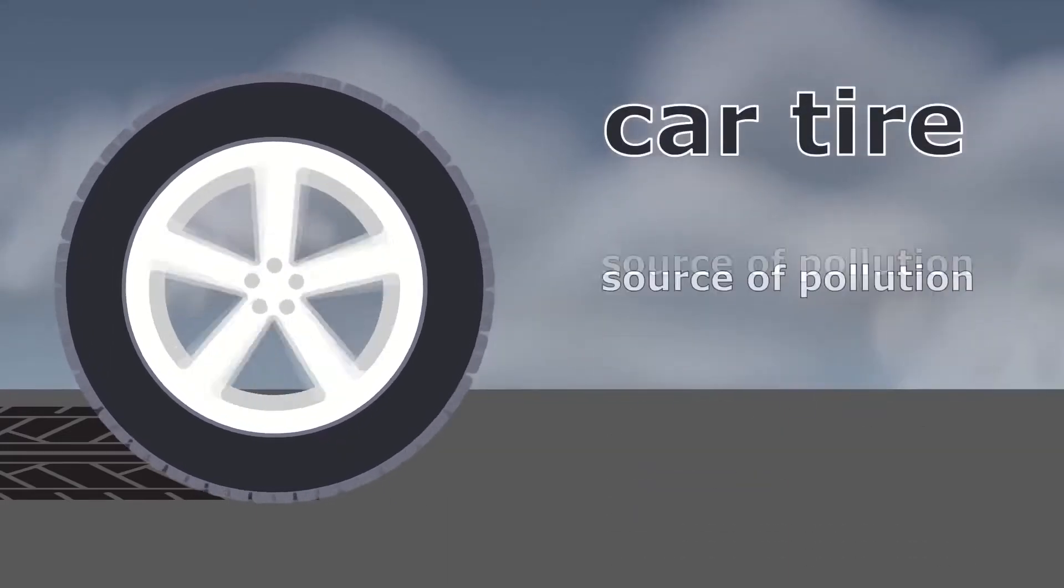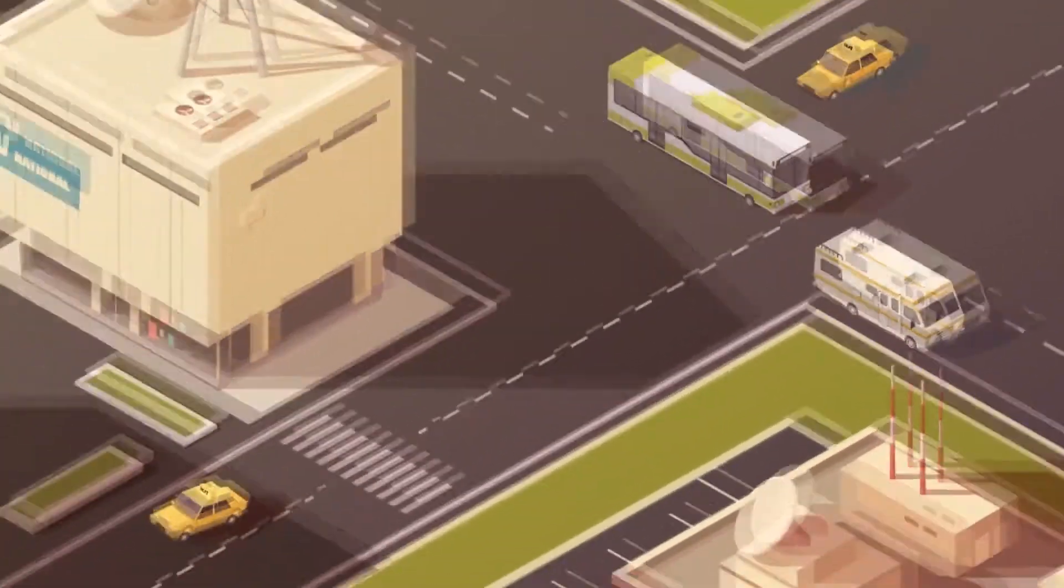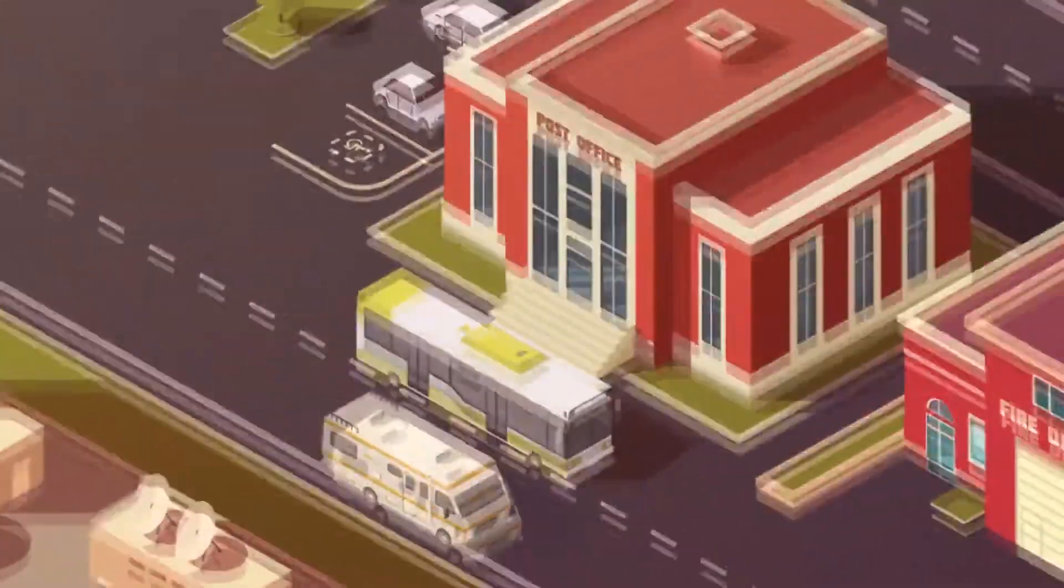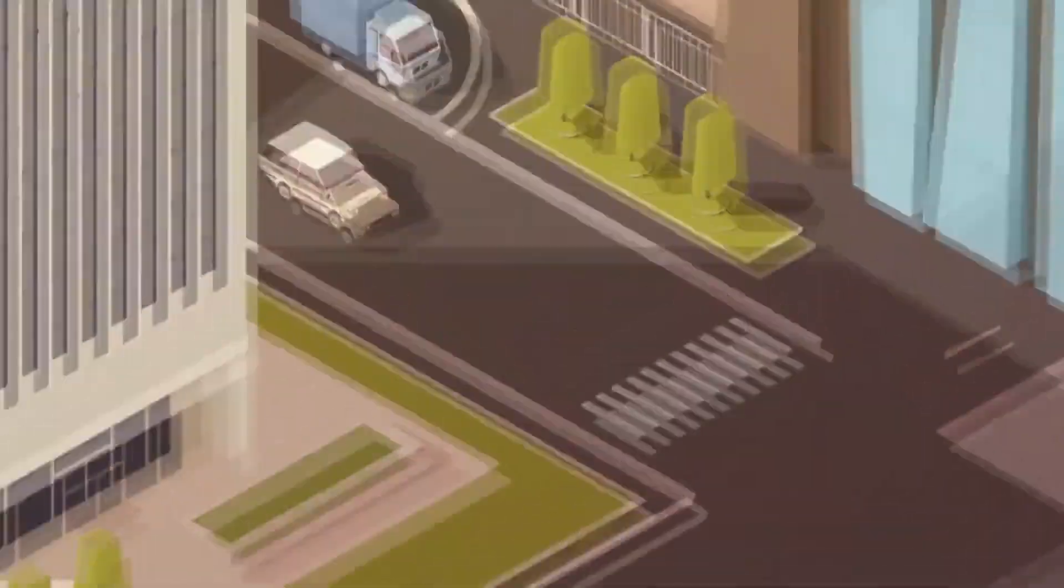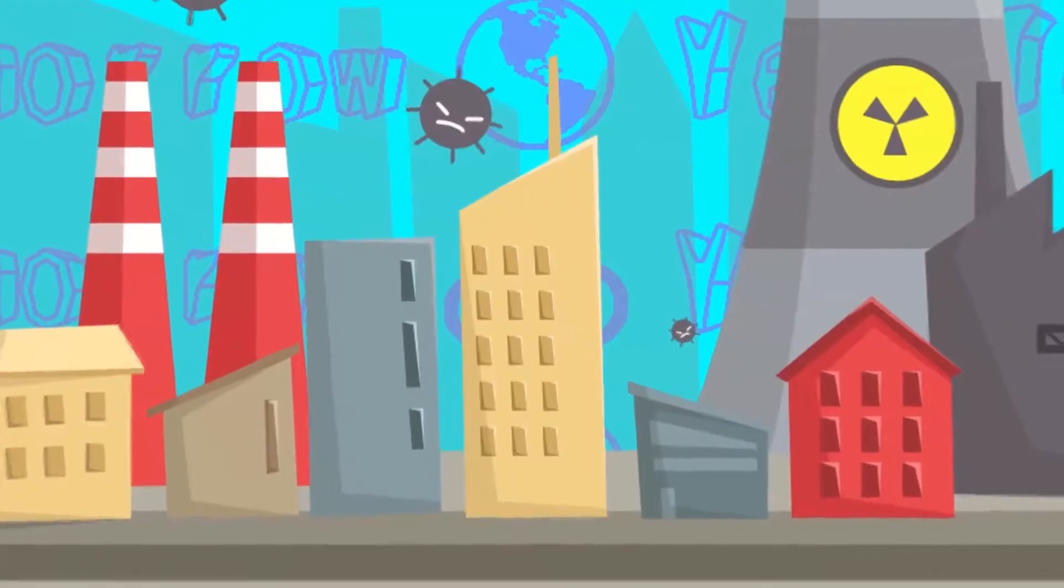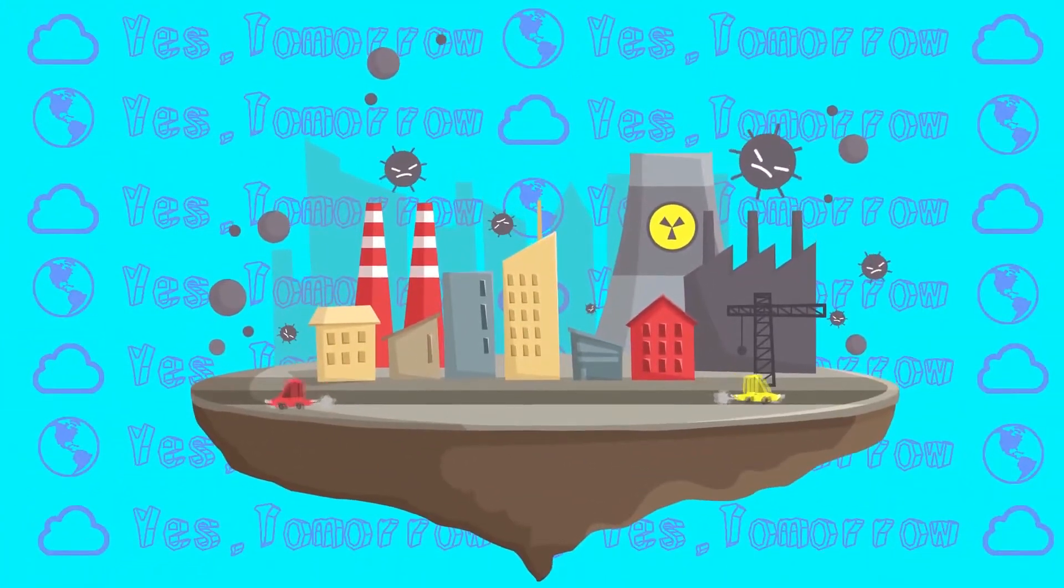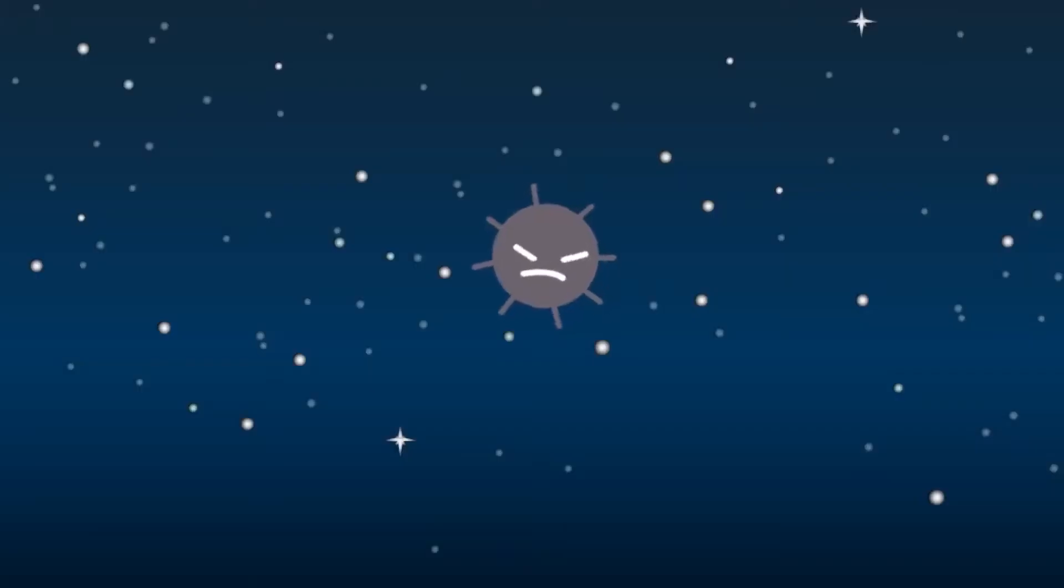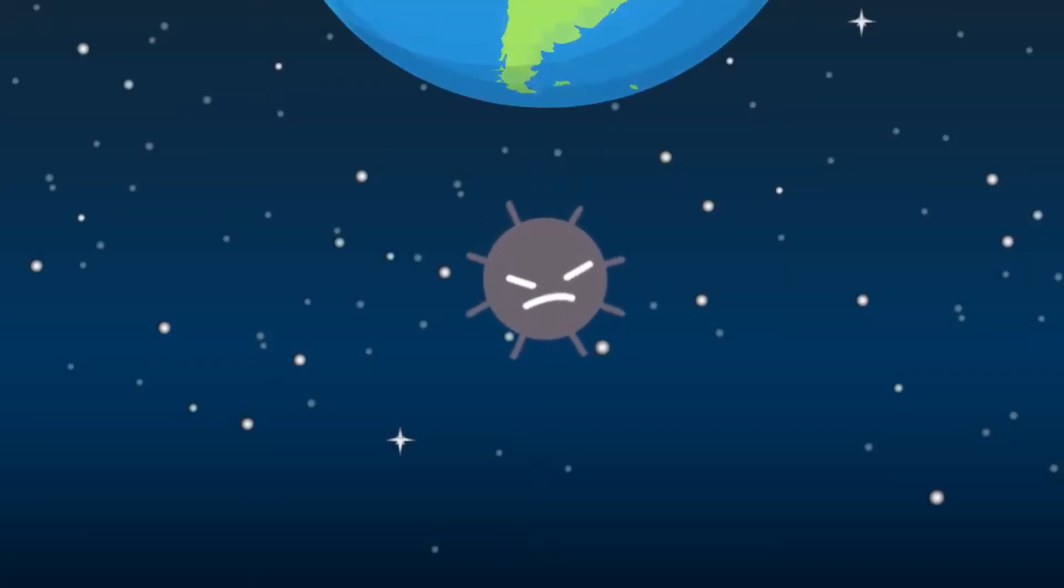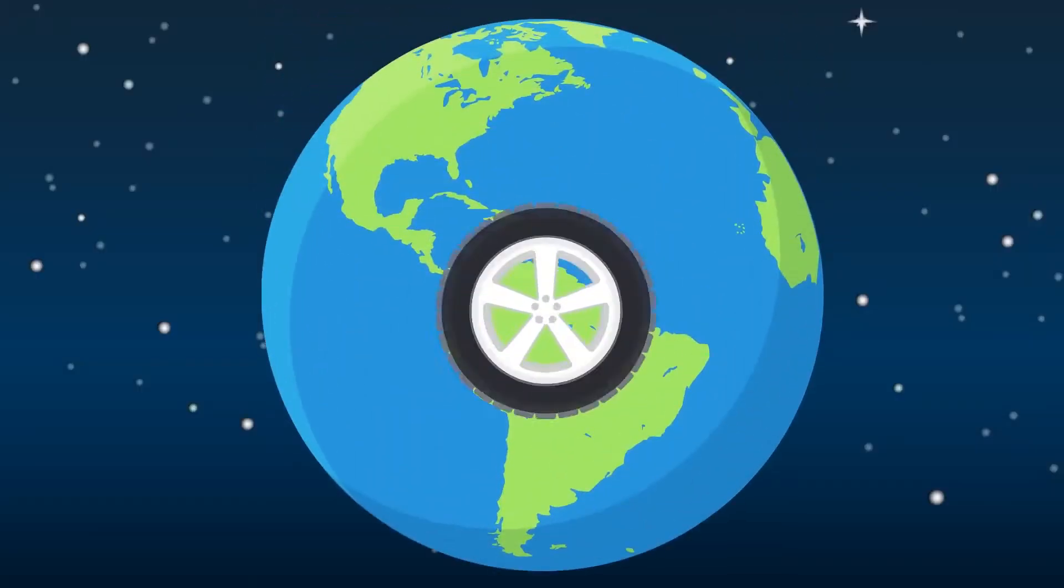Car tires as a source of pollution. Road transport is critical to the functioning of social production and people's lives. However, it is the main global source of environmental pollution. One of these dangers for the ecosystem of our planet is automobile tires.